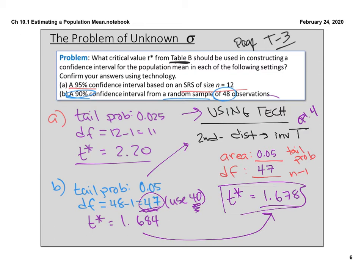You can also compare using part A. I go second, distribution, inverse T, option 4 — tail probability 0.025, degrees of freedom 11, paste and calculate. It gives negative 2.20098, which confirms our t* of 2.20, matching what we got from the table since we used the correct degrees of freedom for that one.